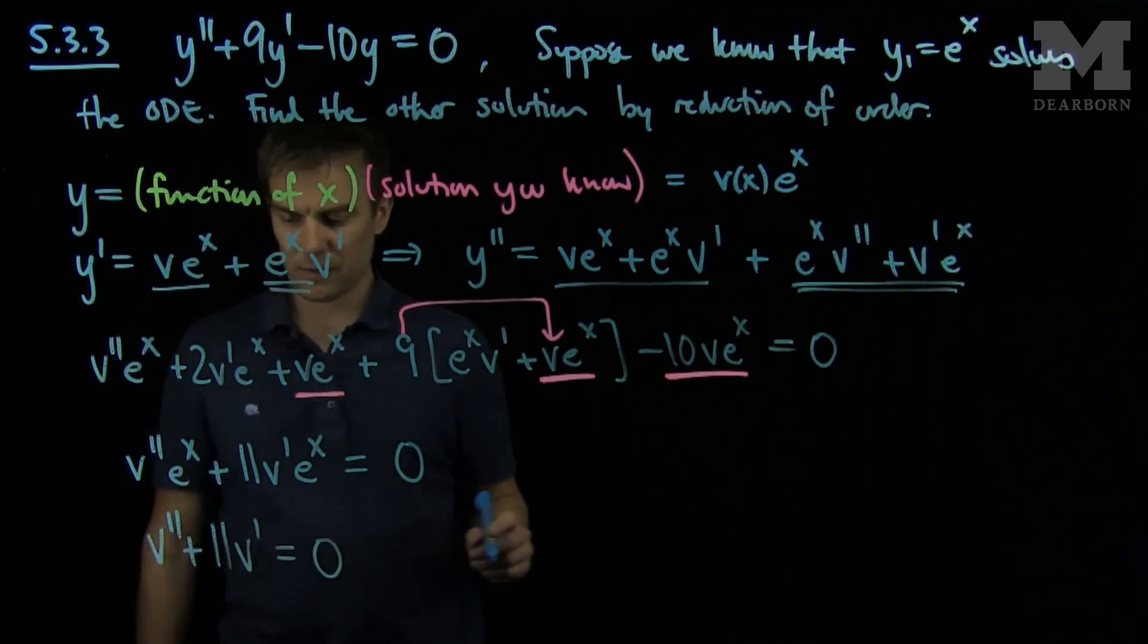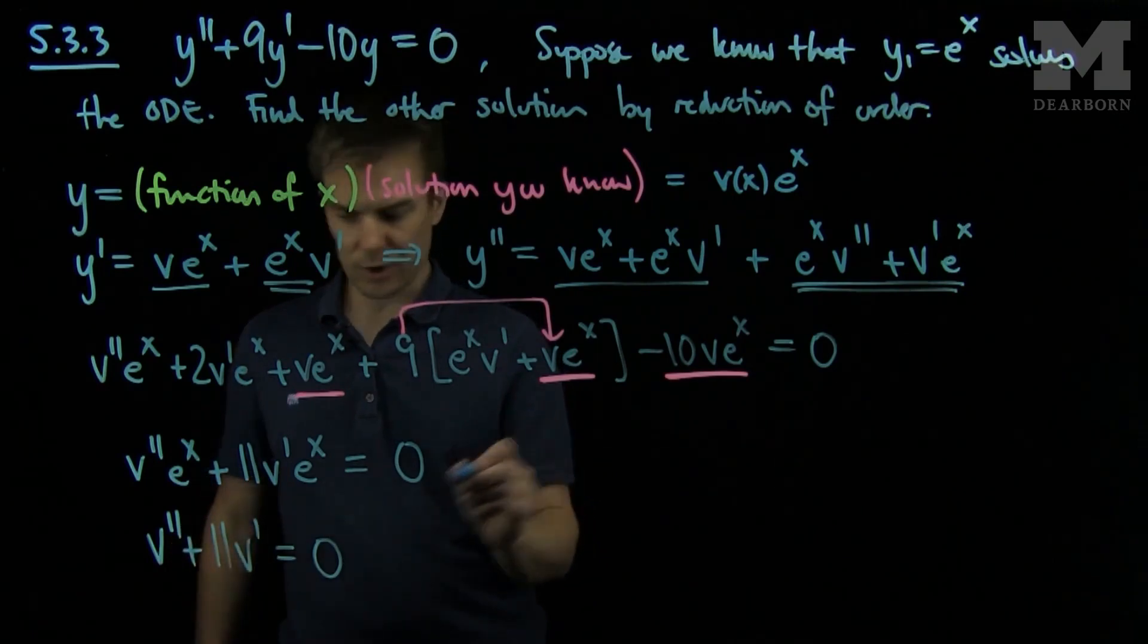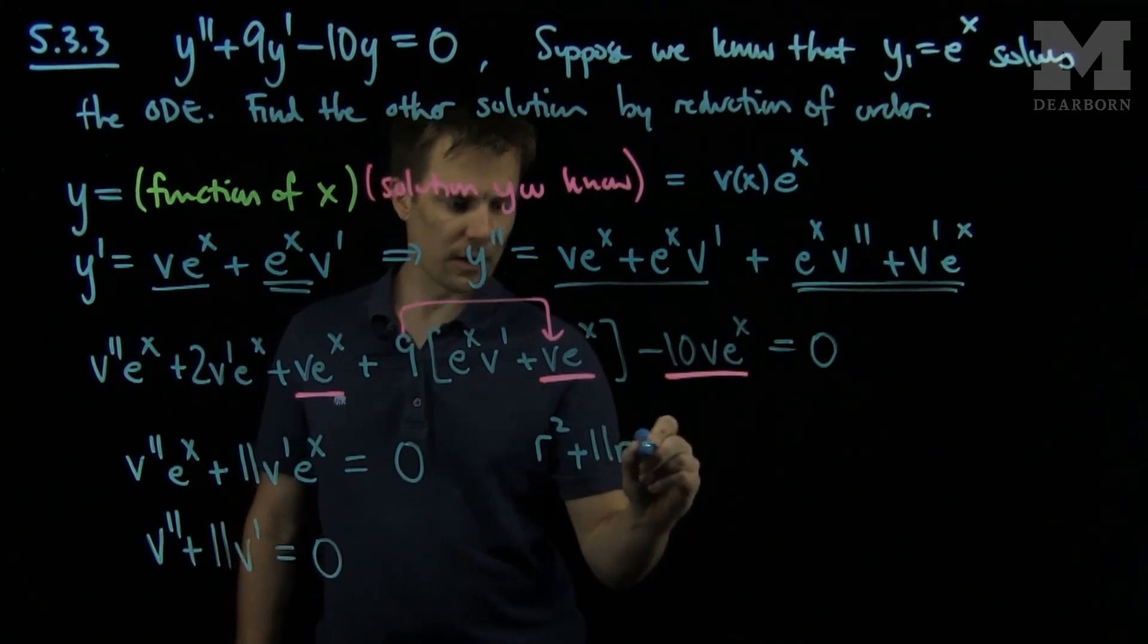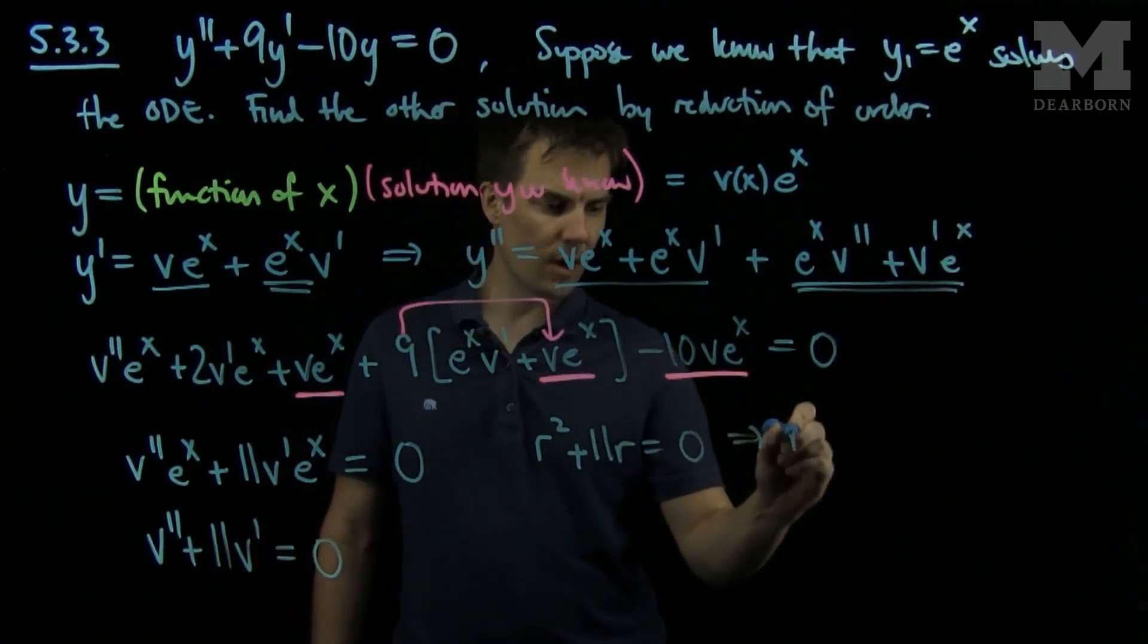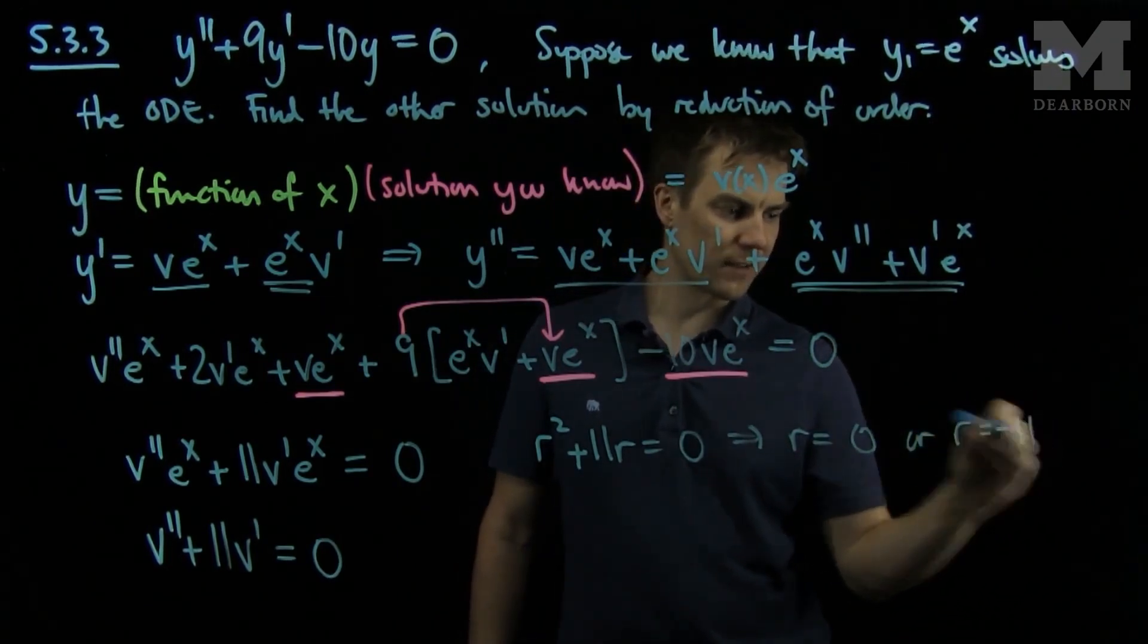And now we know what the solutions of this are. The characteristic equation will give us r squared plus 11 r equals 0, so we have r equals 0 or r equals negative 11.